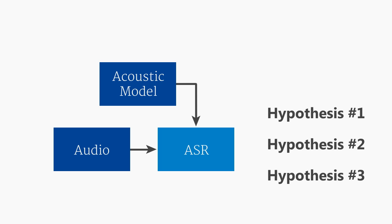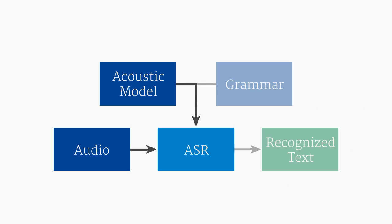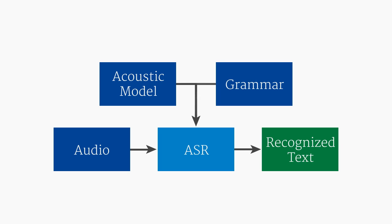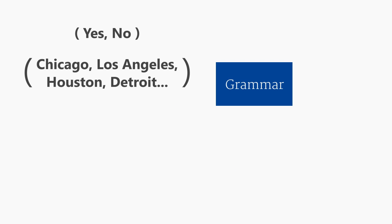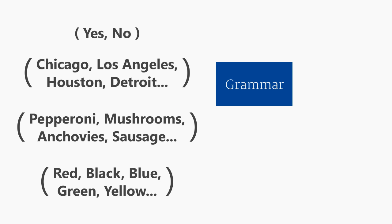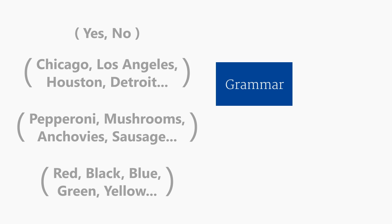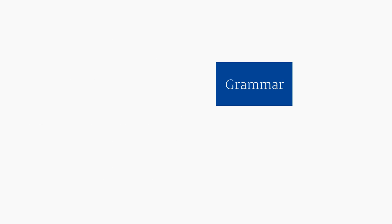This process makes heavy use of statistical inference and probability. A language model, also called a grammar, provides information about the type of words users are expected to speak. Because language modeling is a complex and important topic, it will be covered in more depth in the next video.